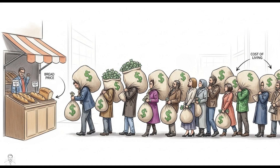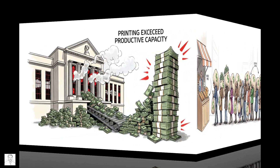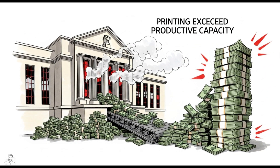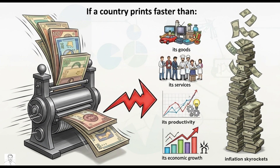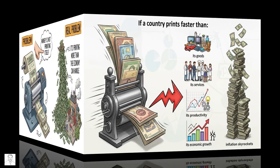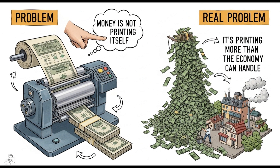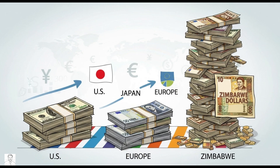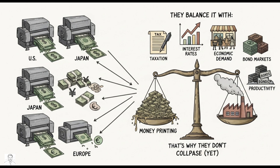Remember Zimbabwe printing trillion-dollar notes, or Venezuela's hyperinflation? People were carrying bags of money just to buy bread. Why? Because printing exceeded productive capacity. If a country prints faster than its goods, services, productivity, and economic growth, then inflation skyrockets. It's not printing itself that is the problem — it's printing more than the economy can handle. The US, Japan, and Europe print money all the time, but not at Zimbabwe levels. They balance it with taxation, interest rates, economic demand, bond markets, and productivity.